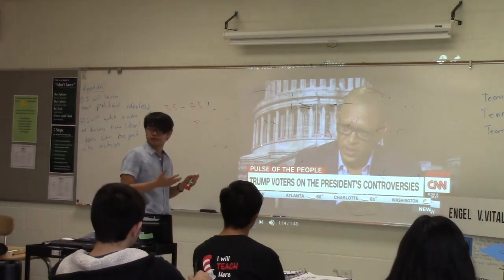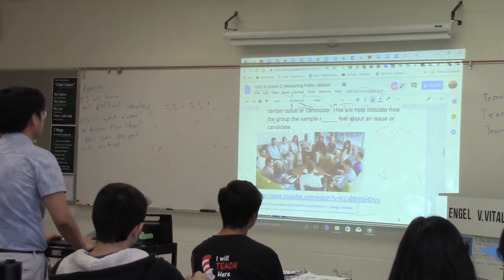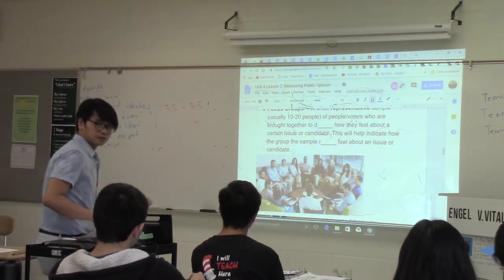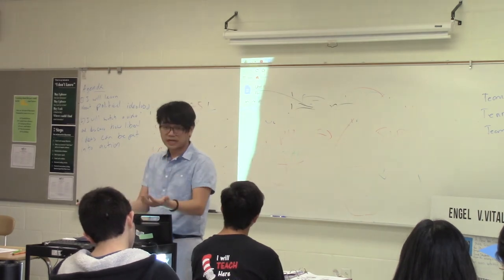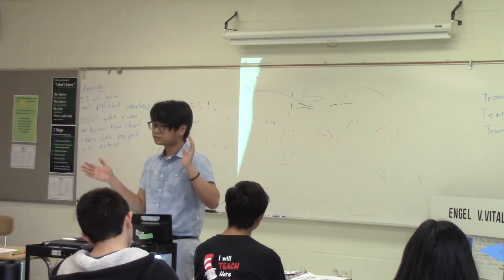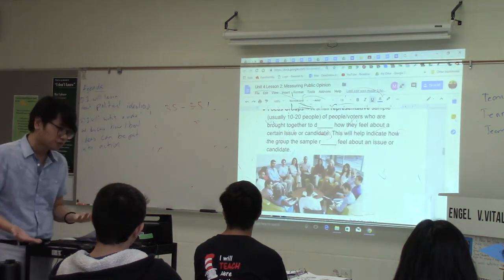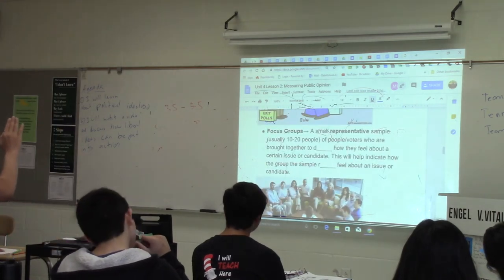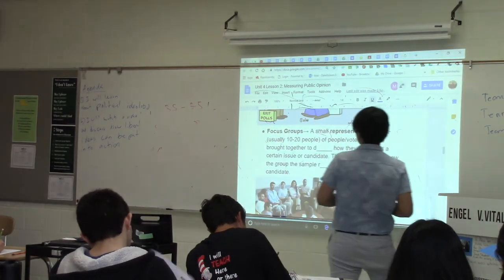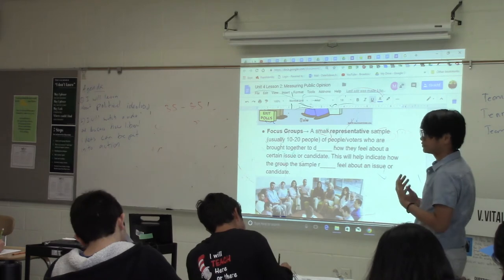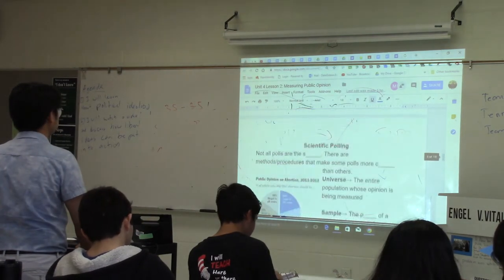Those six people in the video are supposed to represent Trump voters. Focus groups are also used in business for marketing — companies show people a commercial and ask if it's good or if they're more likely to buy. A focus group is a small representative sample, usually 10 to 20 people, of voters or consumers brought together to discuss how they feel about a certain issue or candidate. This indicates how the group the sample represents feels. It's probably the least scientific and least effective type of poll.